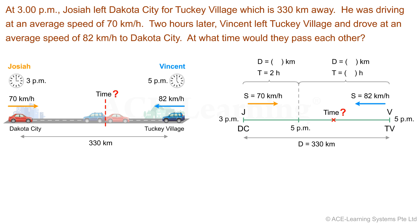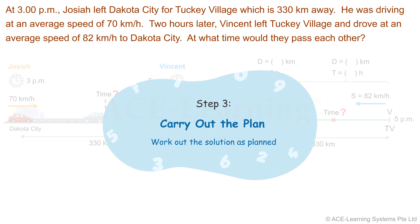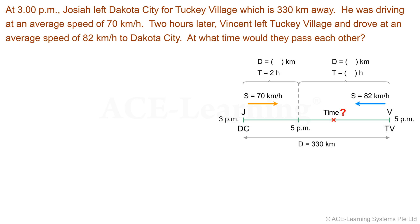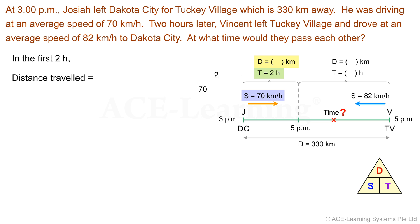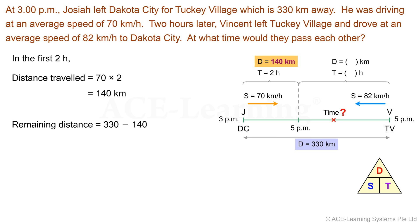Now that we have devised the plan, let's proceed to Step 3: Carry out the plan. From our diagram, the first step is to find the distance Josiah traveled in the first 2 hours. Recalling the speed triangle formula, distance equals speed times time. So in the first 2 hours, distance traveled equals 70 times 2, which equals 140 km. The remaining distance to travel is 330 minus 140, which equals 190 km.